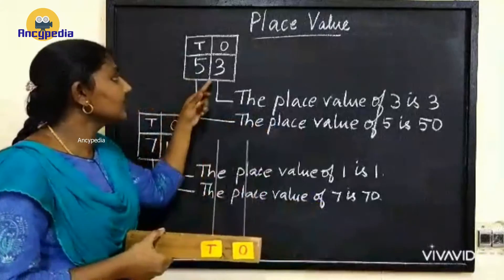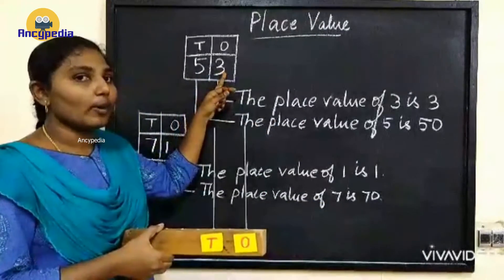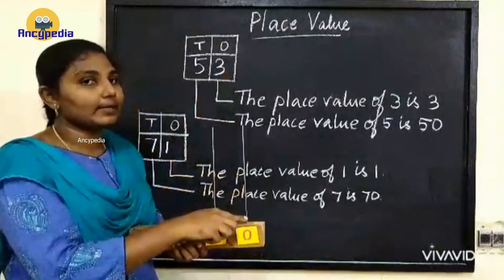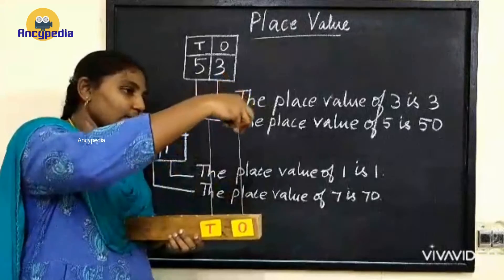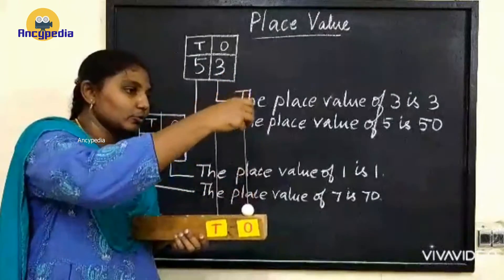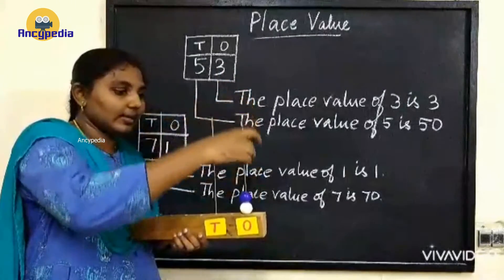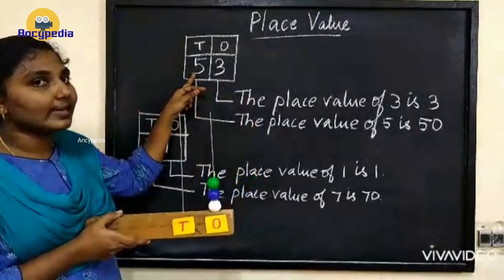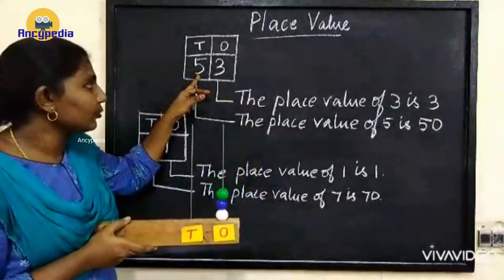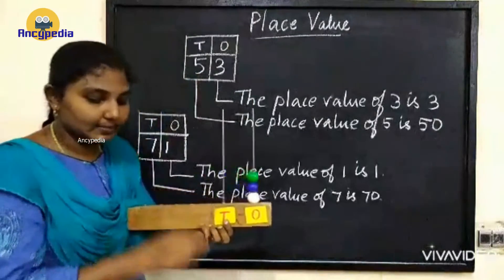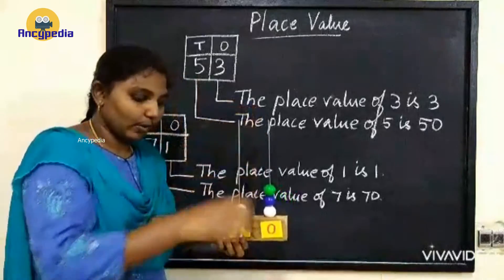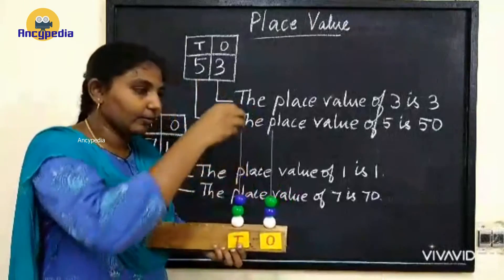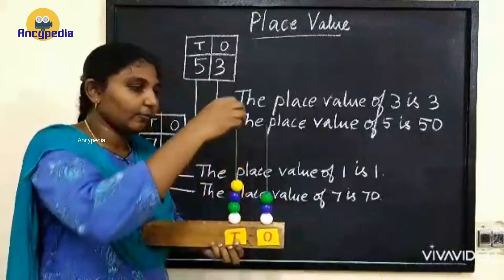Here we have 3 in 1's place, so we have to place 3 beads in 1's place: 1, 2, 3. Next we have 5 in 10's place, so we have to place 5 beads in 10's place: 1, 2, 3, 4, 5.